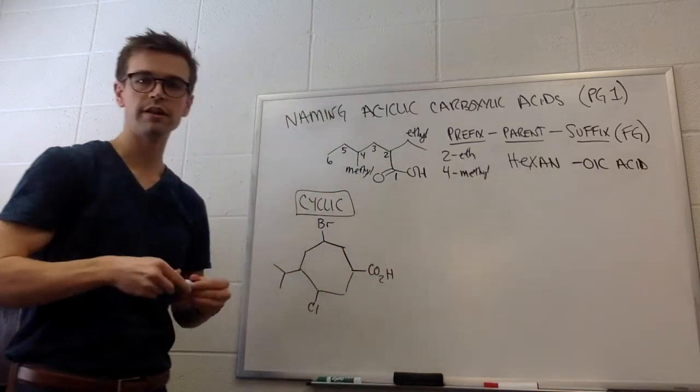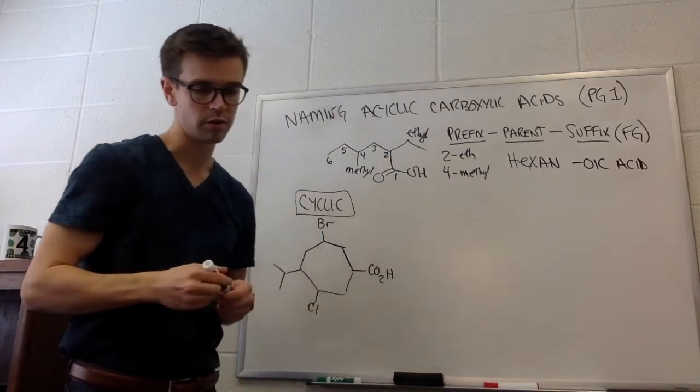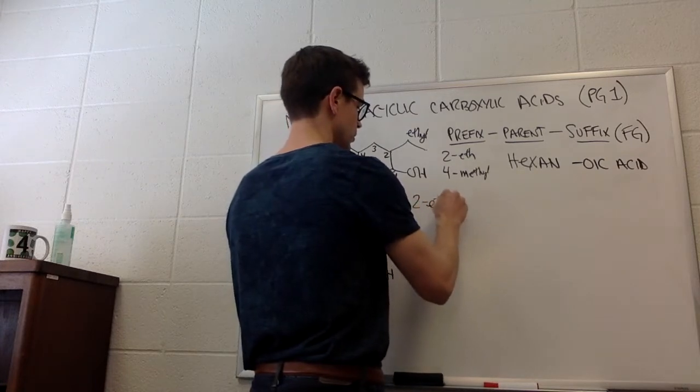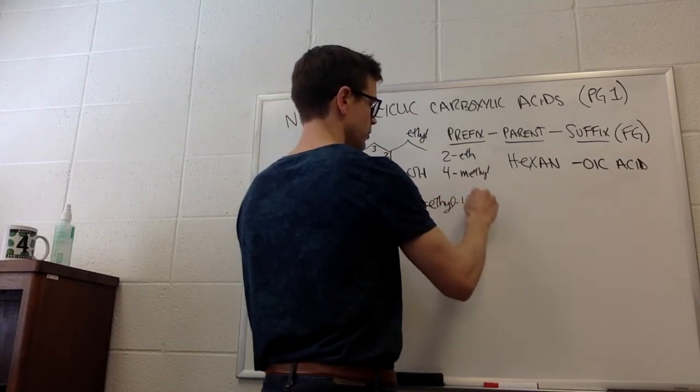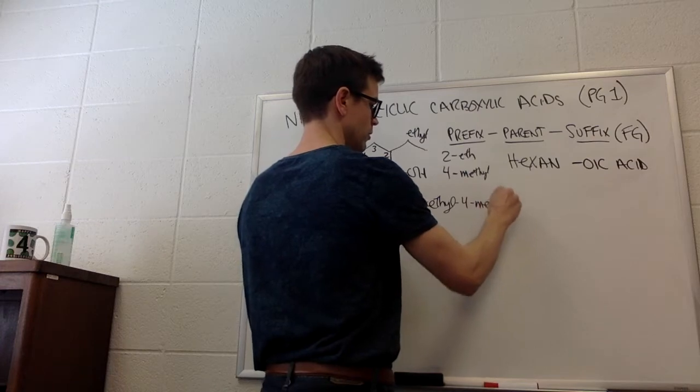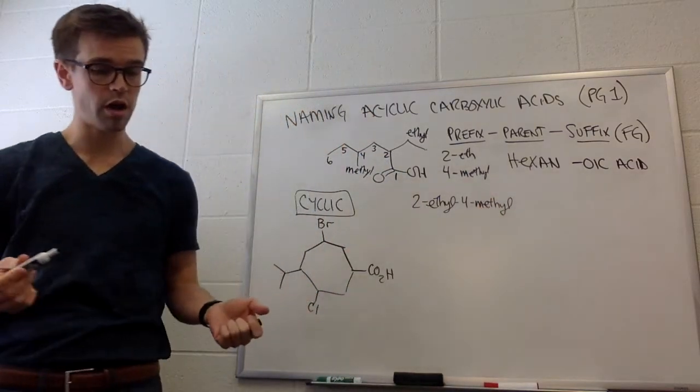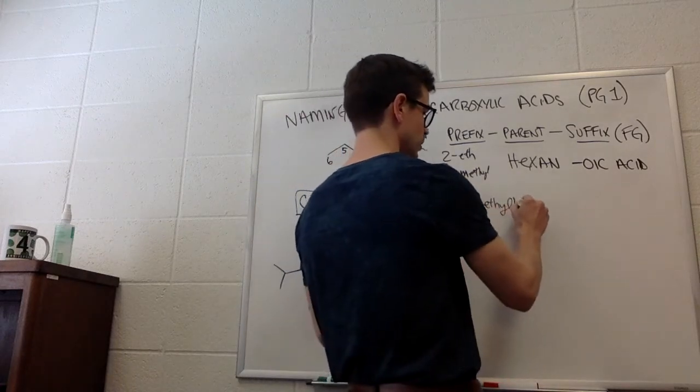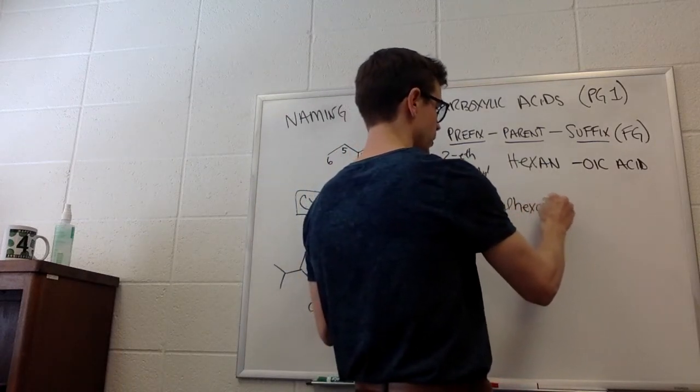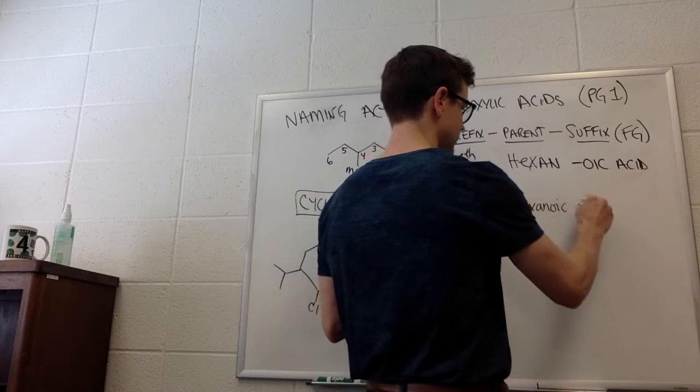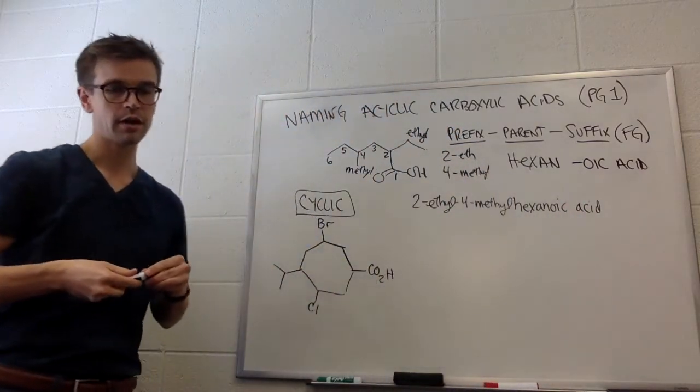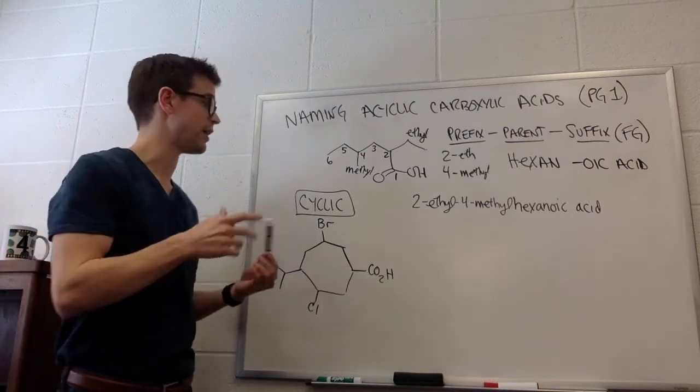So this is going to be two ethyl and four methyl. So putting this all together, this molecule would be called two ethyl, four methyl, hexanoic acid. So that is how we name carboxylic acids that are acyclic.